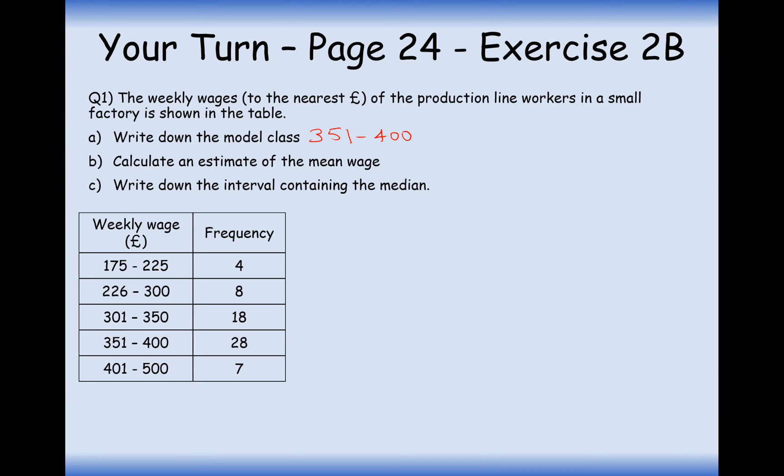Calculate an estimate for the mean wage. Okay. So the first thing we'll have to do then is I'm going to draw a new column that will work out the values and the midpoints on each of these weekly wage groups. So the midpoint for the first one is going to be 200. The next one, a little formula that you might want to use here to work out the midpoints is 226 plus 300 divided by 2. It effectively finds the midpoint between 226 and 300. And this is going to be 263.